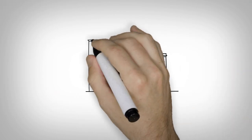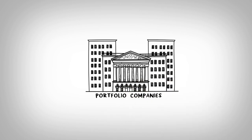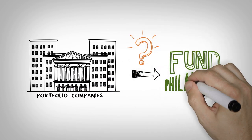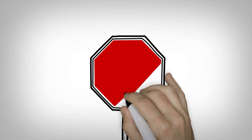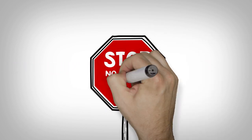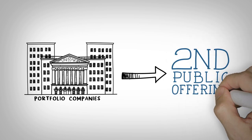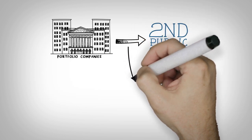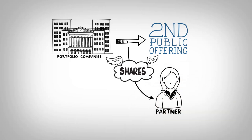Let's take a look at another possible scenario. How about those portfolio companies — can those interests be contributed to fund philanthropy? Some private equity firm structures do not allow for the in-kind distribution of shares. However, in some structures, a firm sponsoring a secondary public offering may be able to distribute shares to partners prior to the secondary public offering.